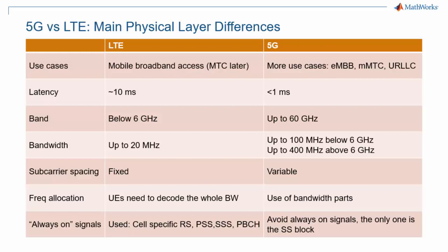Moving on to more detailed points on the physical layer, the subcarrier spacing, fixed in LTE at 15 kHz, can now take values between 15 and 240 kHz. Regarding frequency allocation, an LTE UE placed in a 20 MHz cell is required to decode the whole bandwidth, and signals of interest can span the whole bandwidth. On the other hand, 5G UEs do not need to support the whole bandwidth. Remember that the bandwidth in 5G NR can be much larger, which would have compounded that problem. Signals of interest can be confined to a subsection of a bandwidth, and bandwidth parts are one of the new concepts that help with this capability.